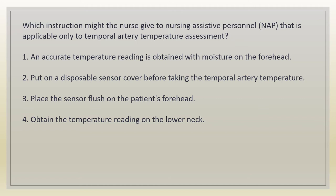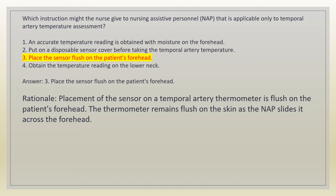Which instruction might the nurse give to nursing assistive personnel regarding temporal artery temperature assessment? 1. An accurate temperature reading is obtained with moisture on the forehead. 2. Put on a disposable sensor cover before taking the temporal artery temperature. 3. Place the sensor flush on the patient's forehead. 4. Obtain the temperature reading on the lower neck. Answer: 3. Place the sensor flush on the patient's forehead. Rationale: placement of the sensor on a temporal artery thermometer is flush on the patient's forehead, and the thermometer remains flush on the skin as the nurse slides it across the forehead.